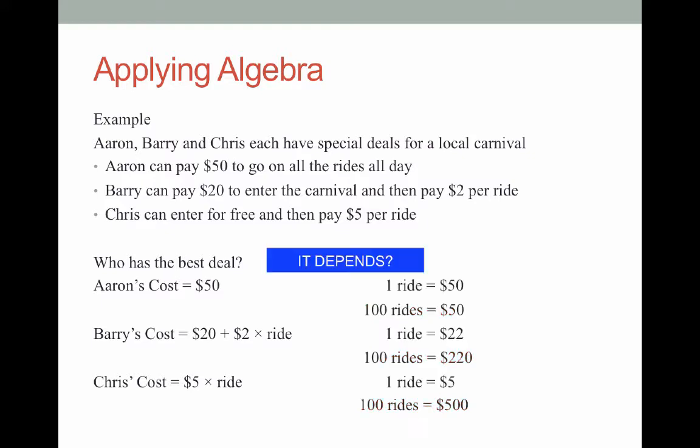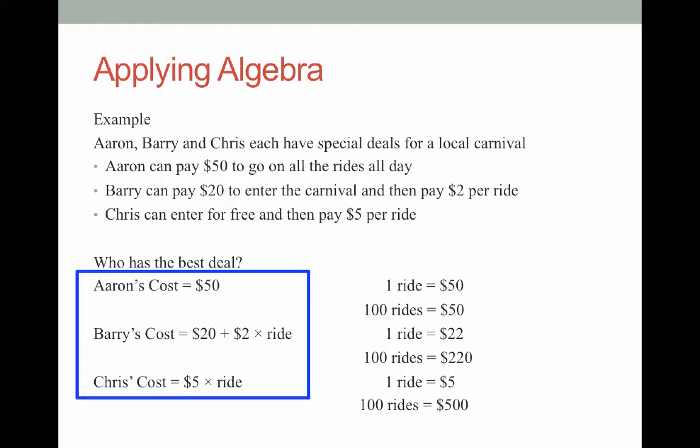So who has the best deal? Well again it depends on how many rides that they take. Now they may not take one or a hundred they might take 50 or 60 or 20 and we won't know who has the best deal. But if we look at the algebra or the pattern that we created we can work out all those costs whenever we need to depending on how many rides they have. All we need to do is work out these three what we call formulas or patterns.